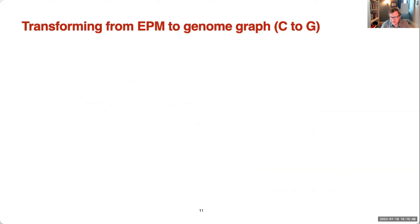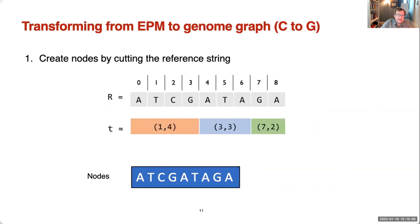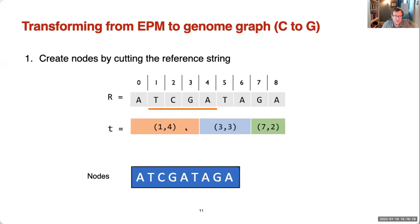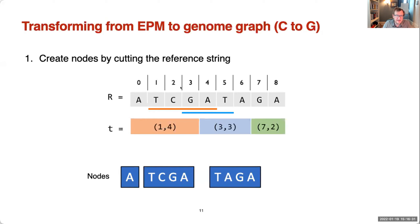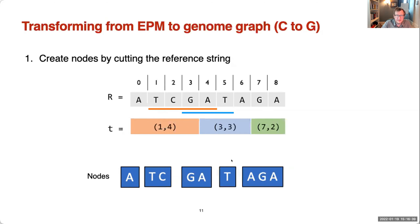The connection between EPM and genome graphs is actually much tighter — we can transform between the two computationally efficiently. Going from a compressed string to a genome graph, we create nodes by cutting the reference string according to the boundaries of the pointers. For instance, the first pointer going from position one to four causes cuts after position zero and after position four. Additional pointers cause further cuts. From the sequence of pointers we get our nodes and their labels. Then we walk down the pointer sequence, connecting nodes with edges according to adjacencies between consecutive pointers.